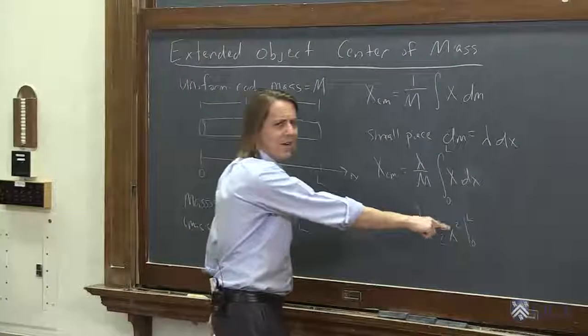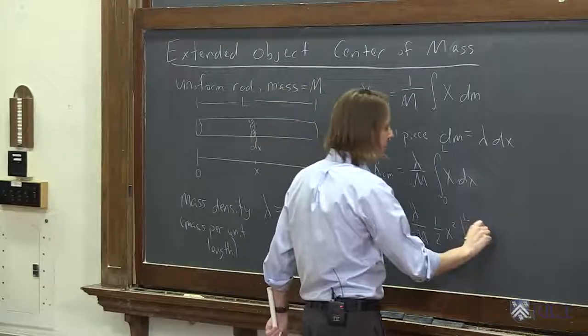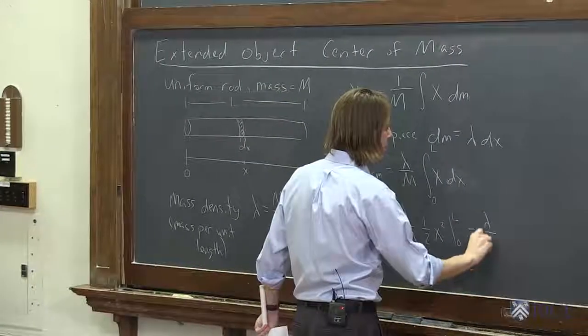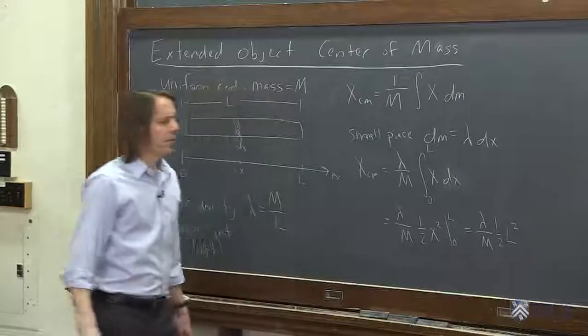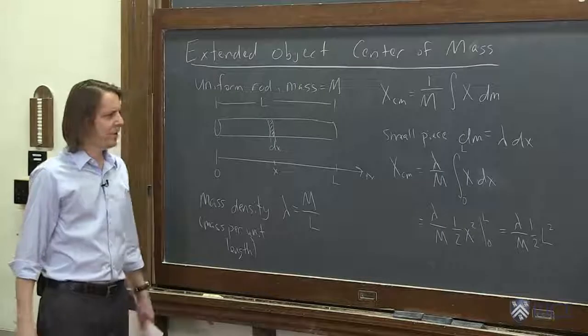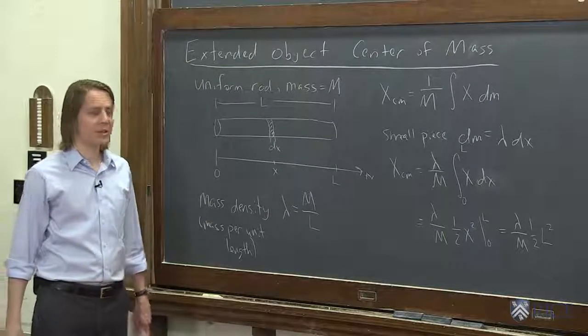So we get lambda over M, 1 half L squared. That looks horribly complicated. That doesn't look nice. But the reason is, lambda and big M kind of have similar information in them. So we calculated lambda from big M.